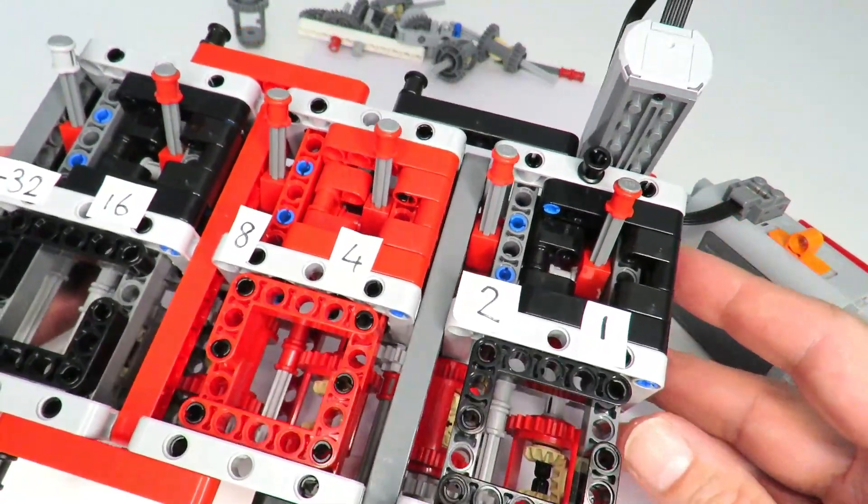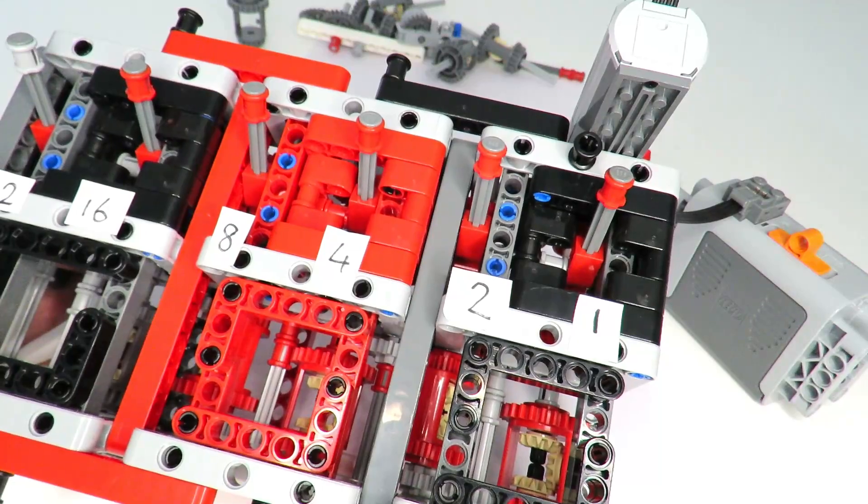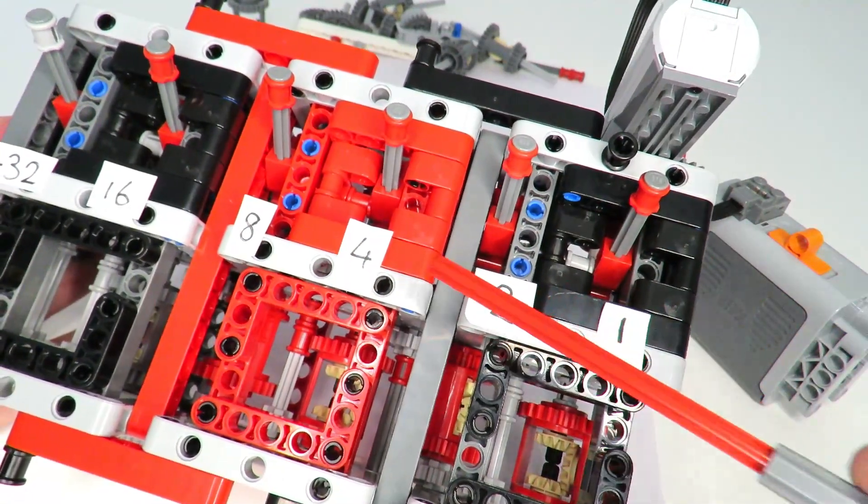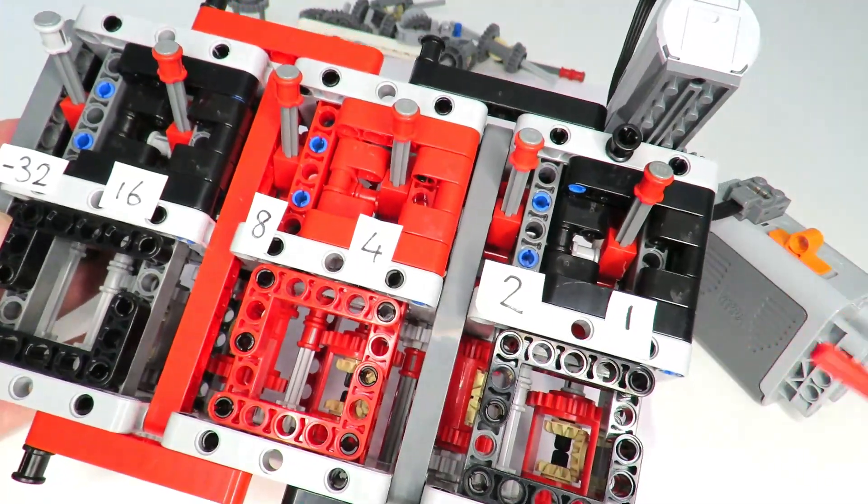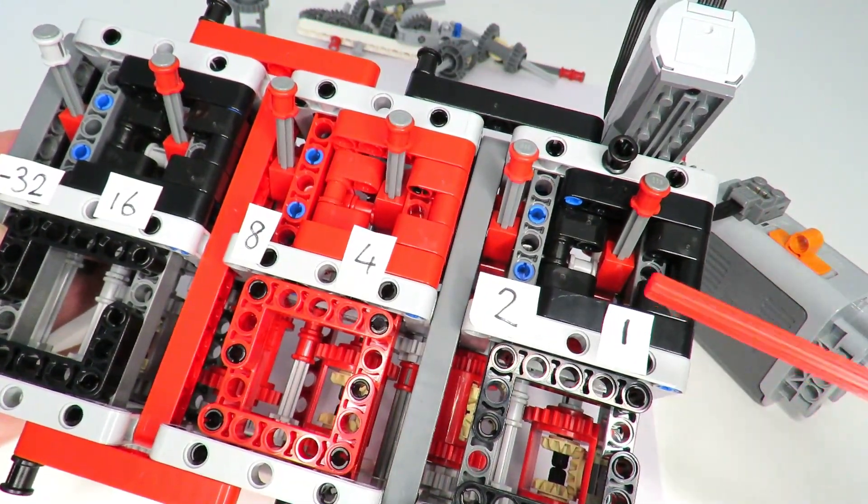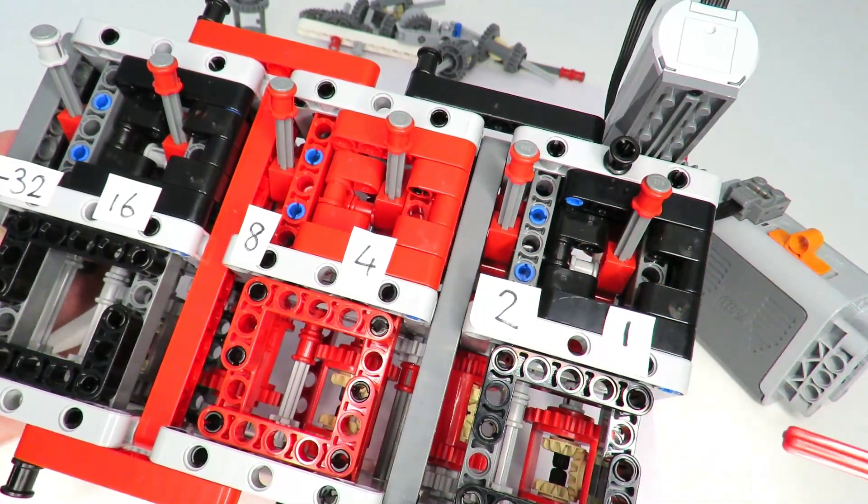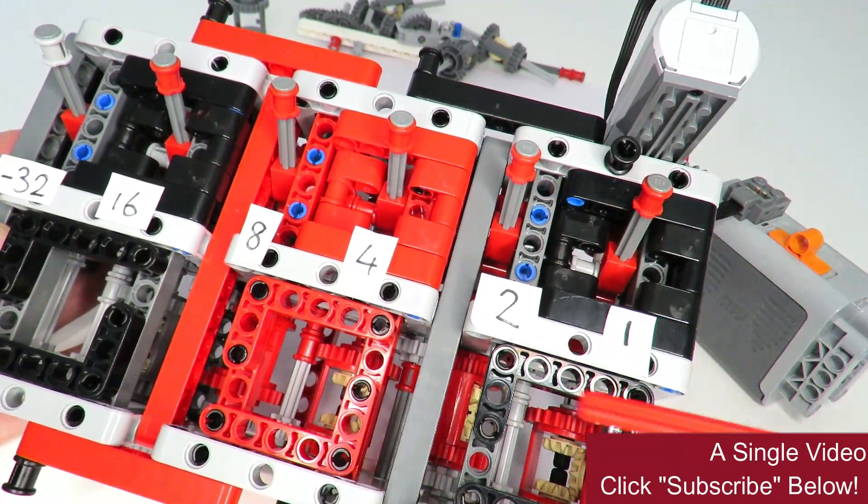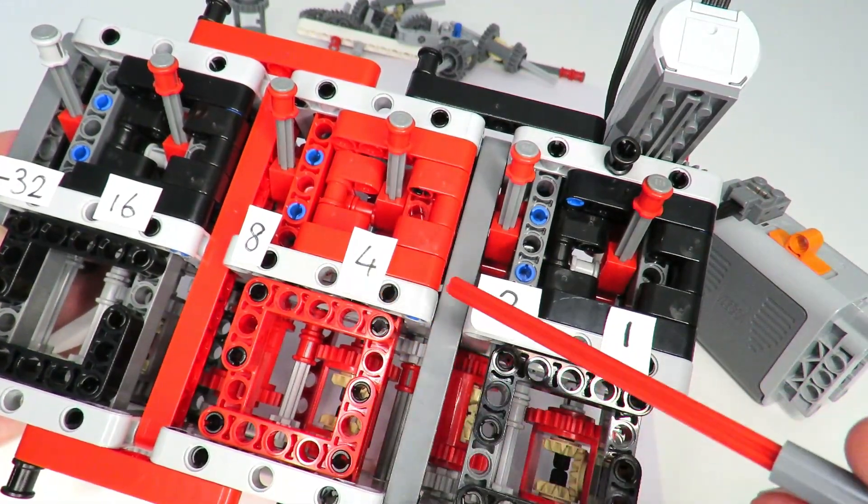The way it works is if you want a particular gearing ratio you simply need to select the numbers on these levers. I've got one, two, four, eight, sixteen, and minus 32. For example, if you like the gear ratio three you have to select one and two to make three. If you want seven you can select one, two, four to make seven. If you like ten you'll be picking eight and two.